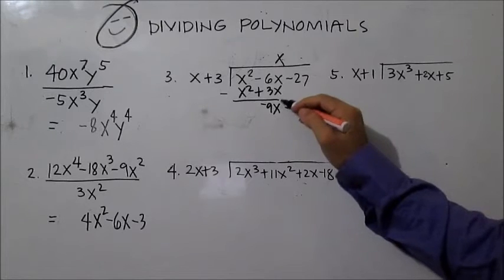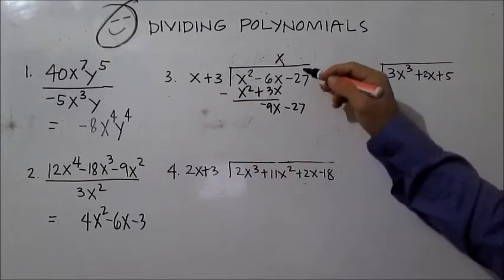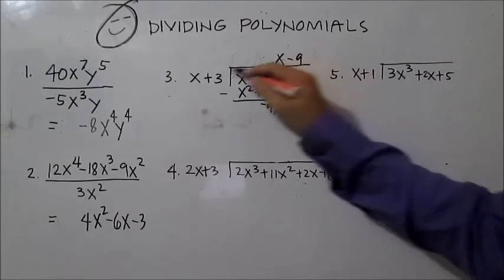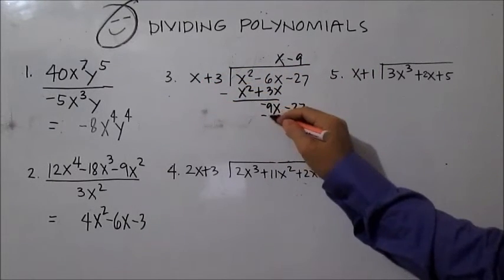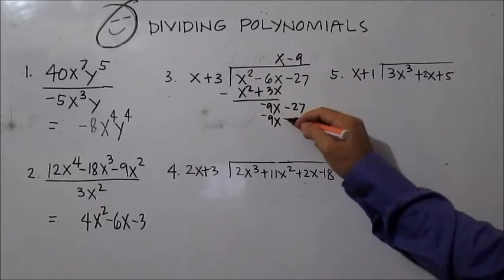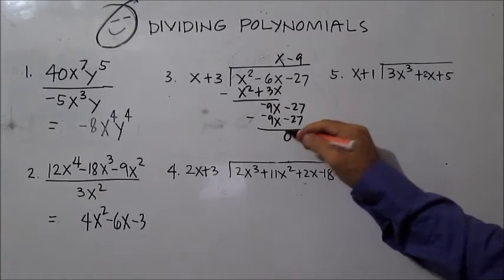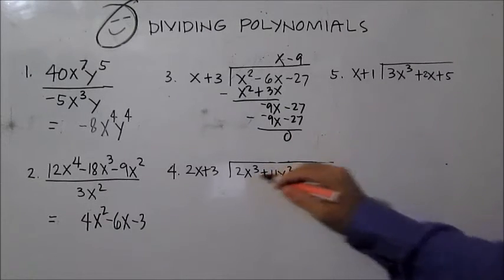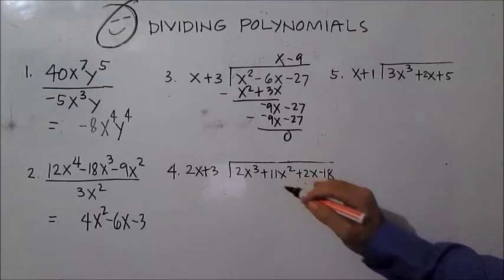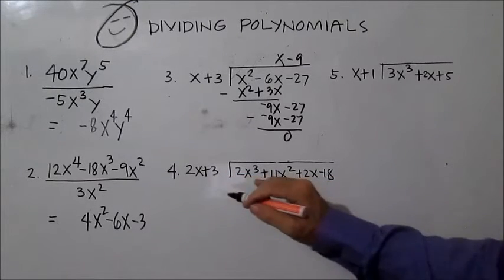Continuing: negative 9x times 3 is negative 27, then subtract — this is 0. For number four, you have a polynomial with four terms divided by a binomial. The same process applies.